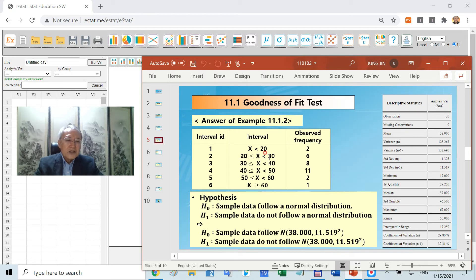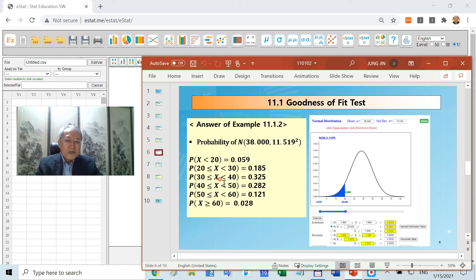In this interval, you have the observed frequency. We want to test whether it is normal or not. You need to calculate the expected probability when H0 is true. H0 is that sample data follow normal distribution. You can calculate it in this manner. Probability X is less than 20, by using ESTAT module.